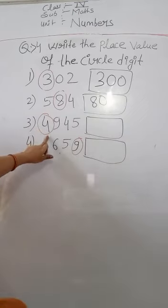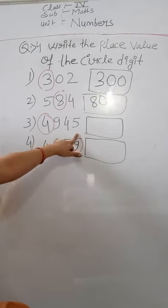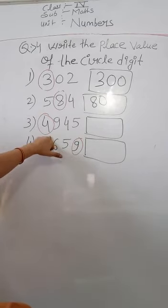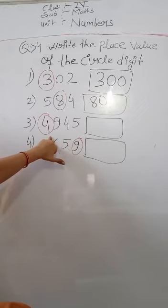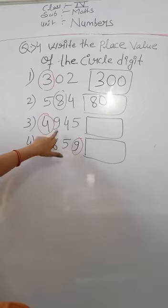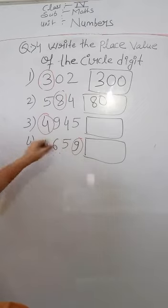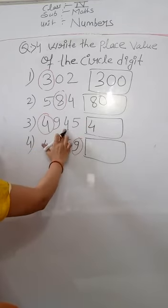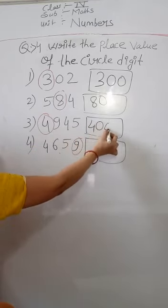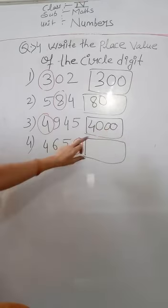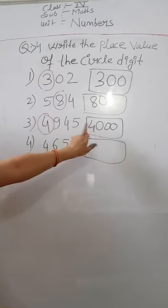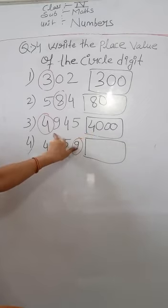The third number is 4945 and we have to write the place value of 4. Which place is 4 in? It is in the thousands place. So we write 4 followed by three zeros — 4000. Clear?